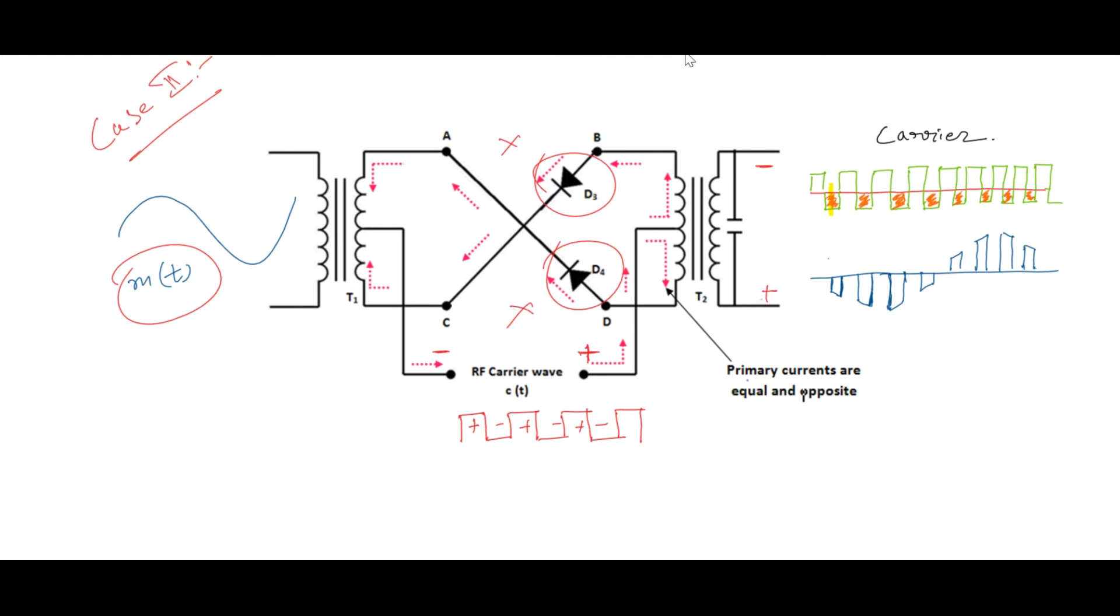Now if we notice the waveforms, the upper one is the carrier wave—same carrier wave—and the lower one is the modulated signal. Now for positive cycles, the diodes will remain off, but for negative cycles we'll observe the outputs. The amplitude variations will be in proportion to the message signal m(t). This will happen only for the negative pulses of carrier.